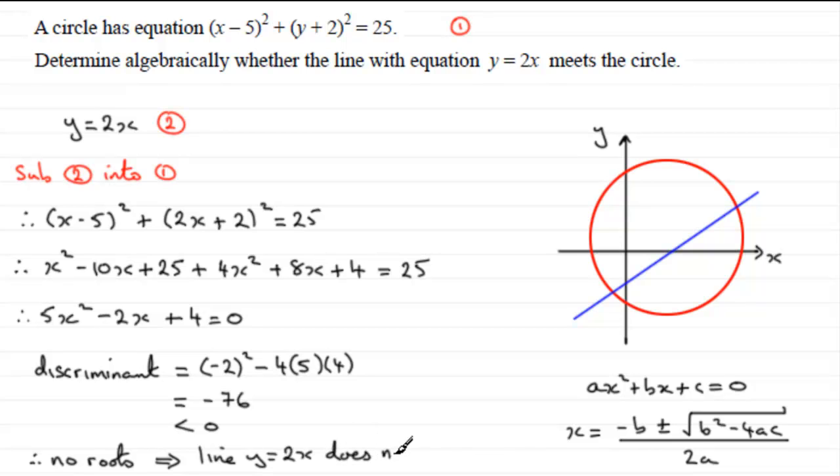So there's no roots, so it follows from here that the line y = 2x does not intersect the circle. So just finish that off there - does not intersect. I won't write the circle in because I haven't got much room there, but hopefully you get the gist of the problem.